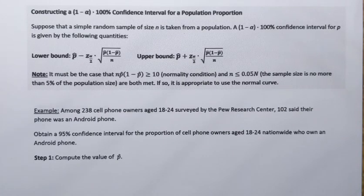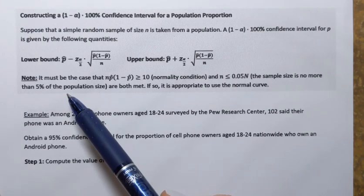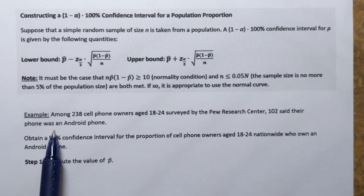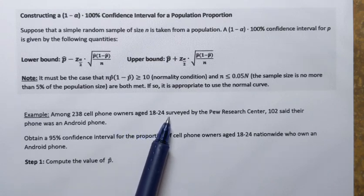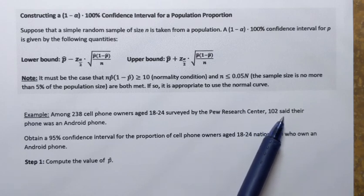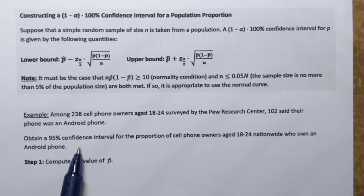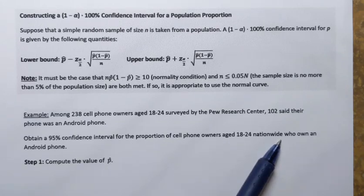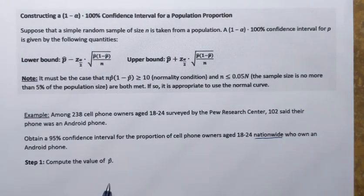In this video we're going to learn how to construct the confidence interval for a population proportion. The general information for constructing a confidence interval for a population proportion is outlined here, but let's see how this can be applied to an example. Among 238 cell phone owners aged 18 through 24 surveyed by the Pew Research Center, 102 said that their phone was an Android phone, and our goal will be to obtain a 95 percent confidence interval for the proportion of cell phone owners aged 18 through 24 nationwide who own an Android phone.